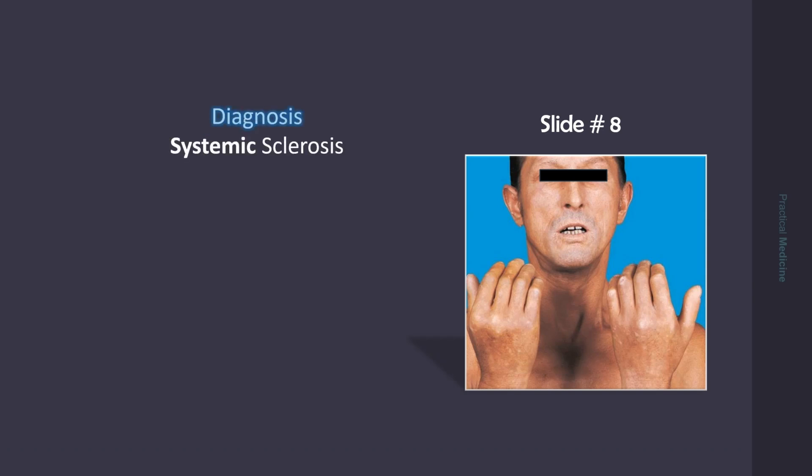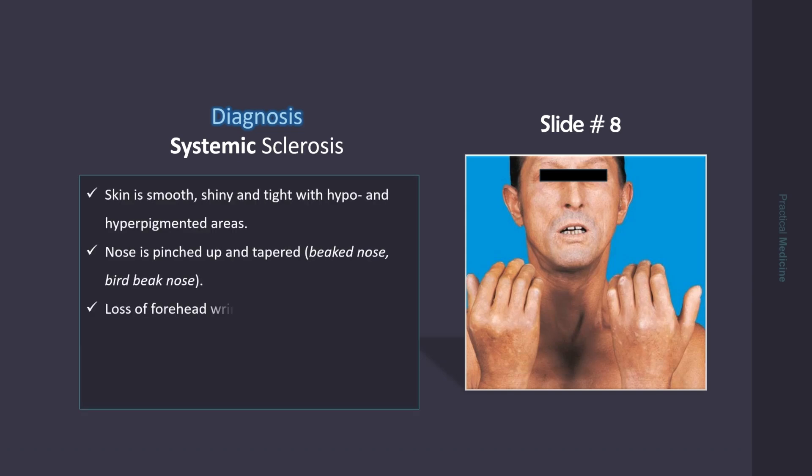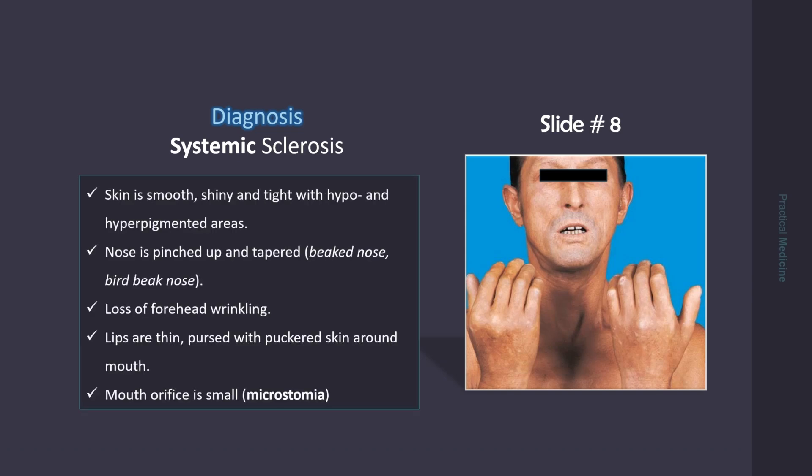This is the slide of systemic sclerosis or scleroderma. Skin is smooth, shiny, and tight with hypo- and hyperpigmented areas. The nose appears pinched up and tapered. There is loss of forehead wrinkling. Lips are thin and pursed with puckered skin around the mouth. Mouth orifice is small, which is called microstomia.